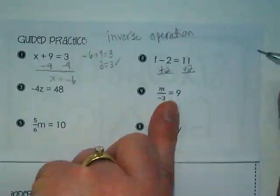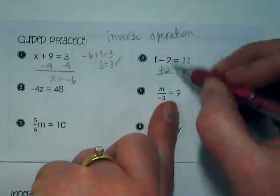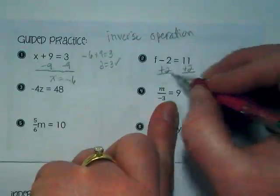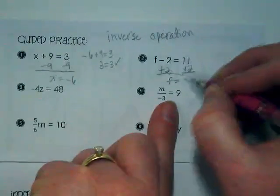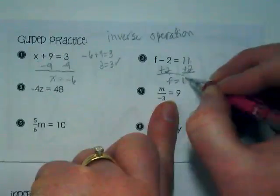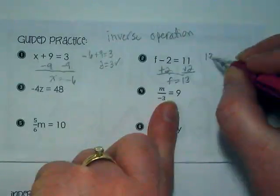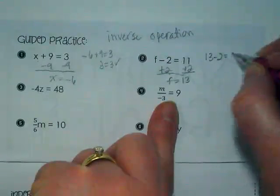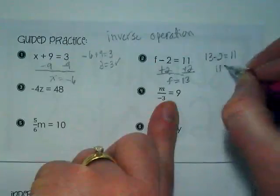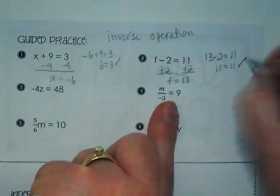And by doing the inverse operation, we are zeroing this part out, leaving us with just the f. 11 plus 2 is equal to 13. Rewrite it as 13 minus 2 equals 11. 13 minus 2 is 11, so this checks.